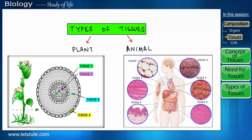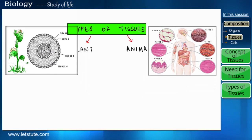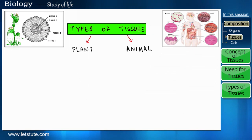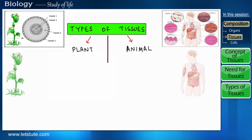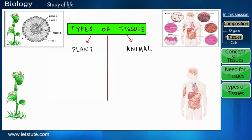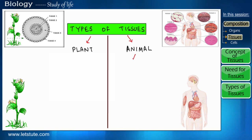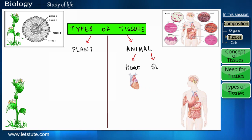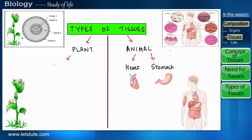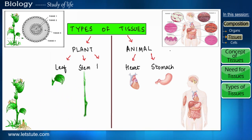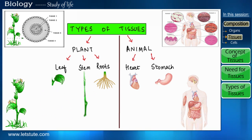But before that, let us understand the reason behind the differences in tissues. The differences in tissues mainly arise due to the differences in the organs that they form. As we all know, the major differences in the types of organs are very much noticeable in plants and animals. In animals the organs include the heart, stomach, and many others, whereas in plants they constitute the leaf, the stem, and the roots.